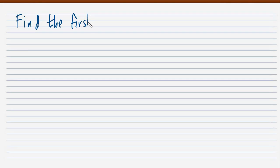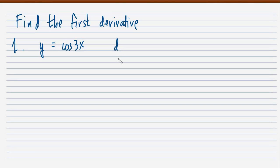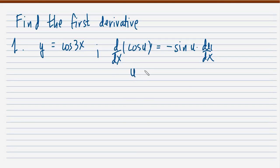Let's start with some basic examples. Find the first derivative of the following functions. Number 1: y = cos(3x). The formula we will use is the derivative of cos(u) with respect to x, which equals negative sin(u) times the derivative of u with respect to x. Here, u is 3x, and the derivative of u is simply 3.